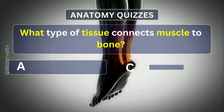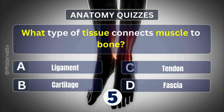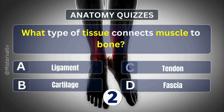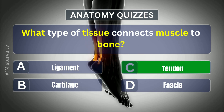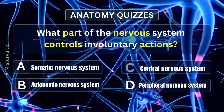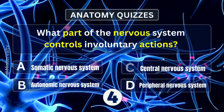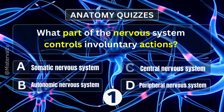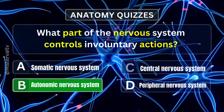What type of tissue connects muscle to bone? Answer. C. Tendon. What part of the nervous system controls involuntary actions? Answer. B. Autonomic nervous system.